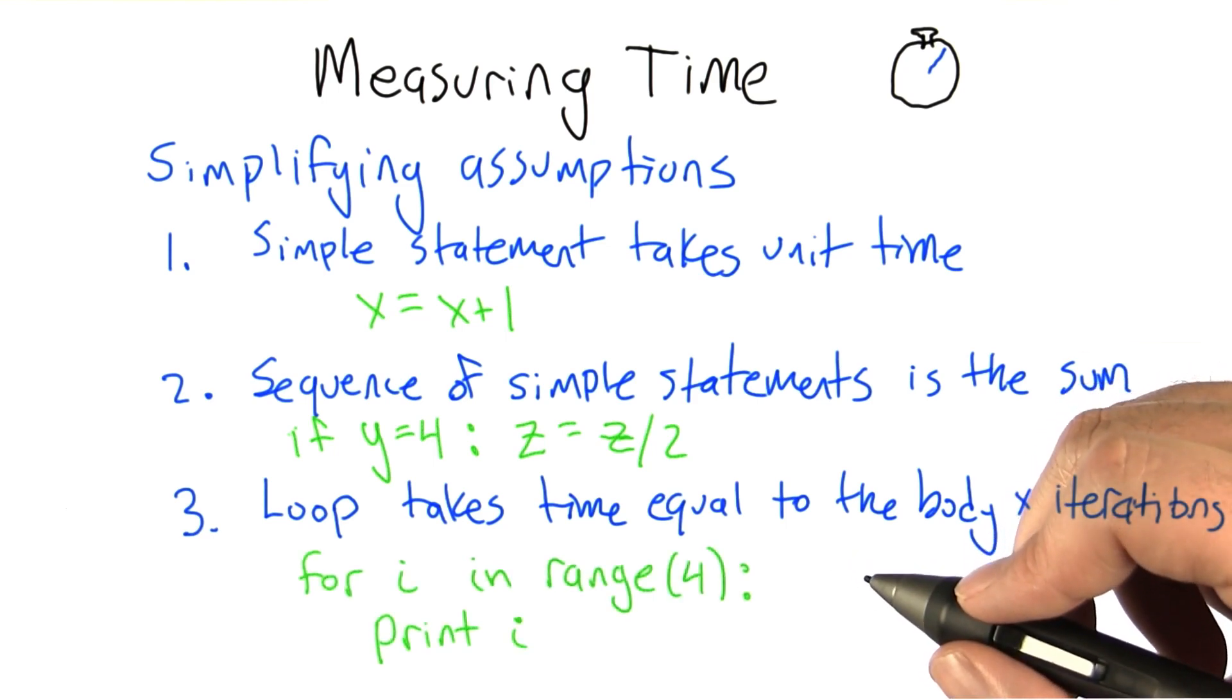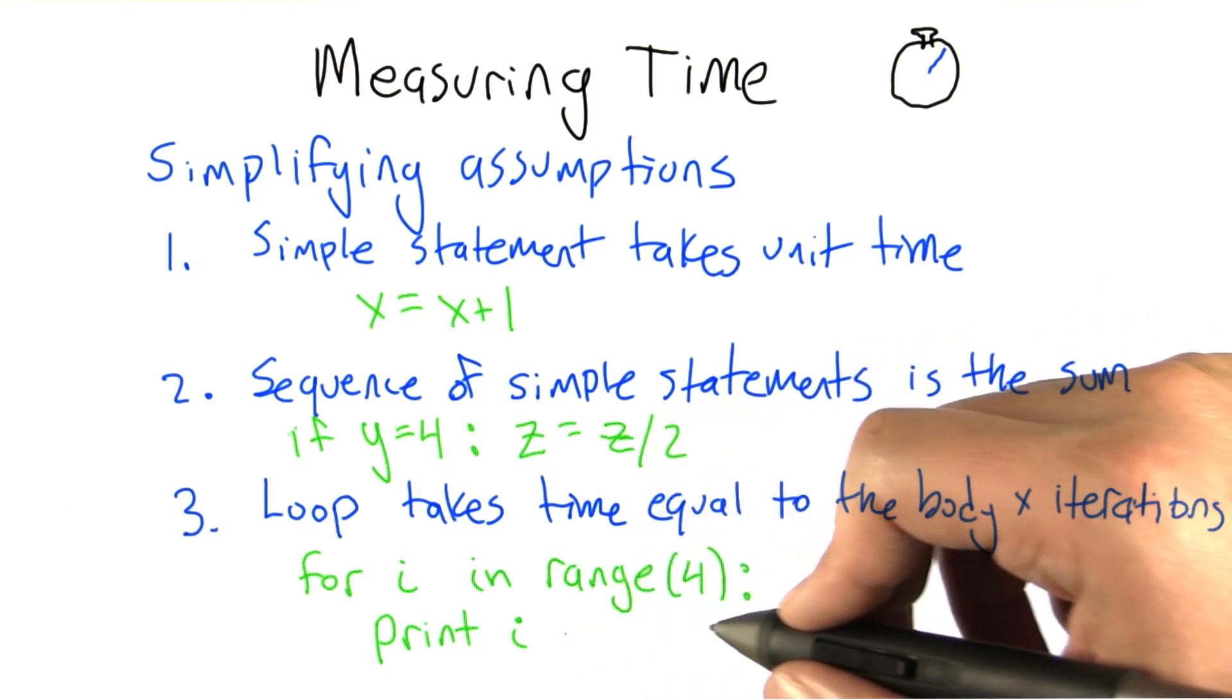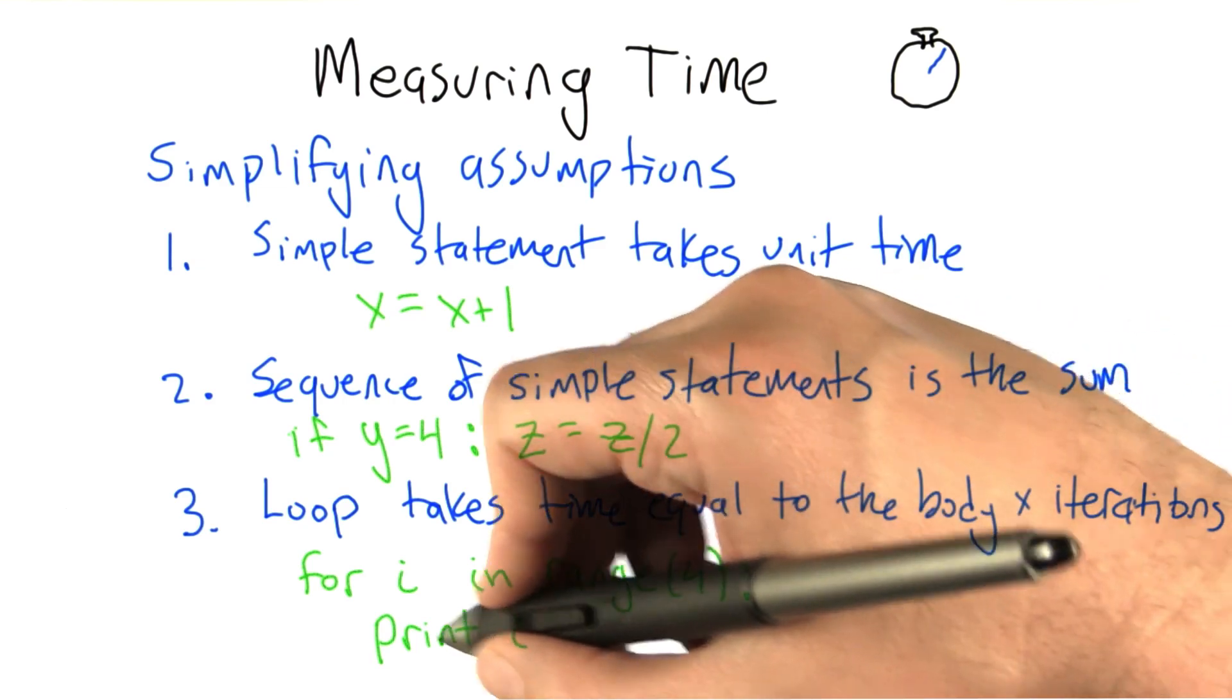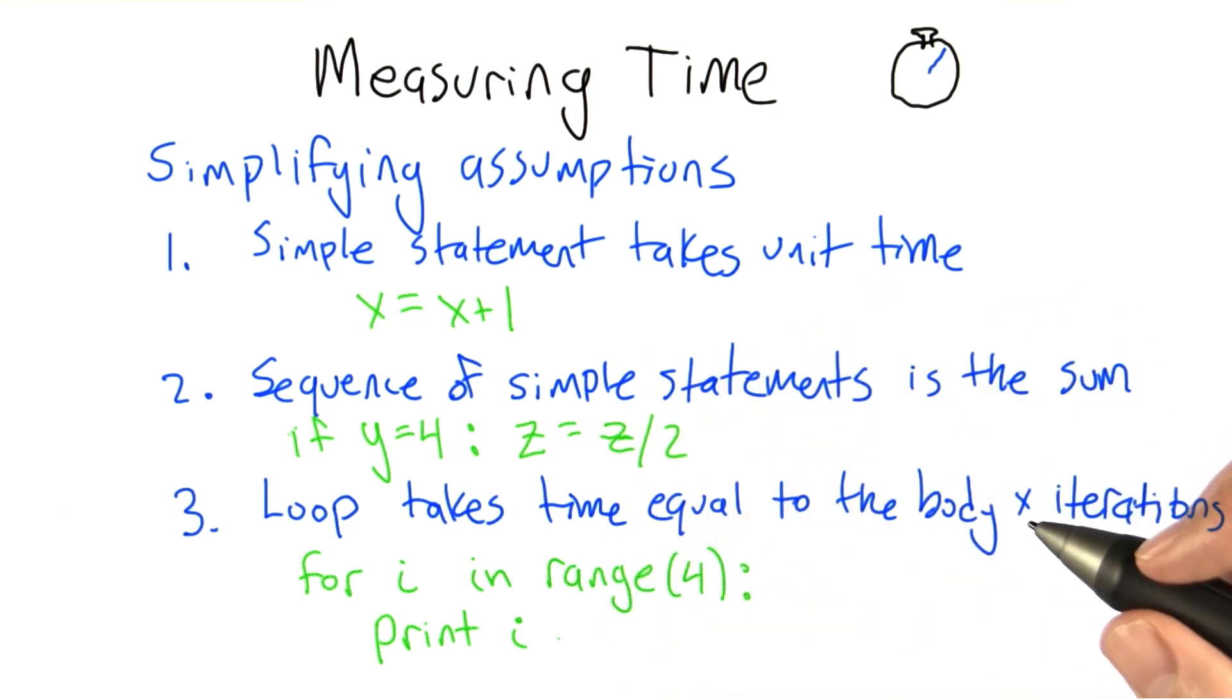A block of statements like this where i takes on a set of values 0, 1, 2, and 3 and prints each one will say that this takes 4 units of time because this unit statement is repeated 4 times. So let's see if you're getting the hang of this.